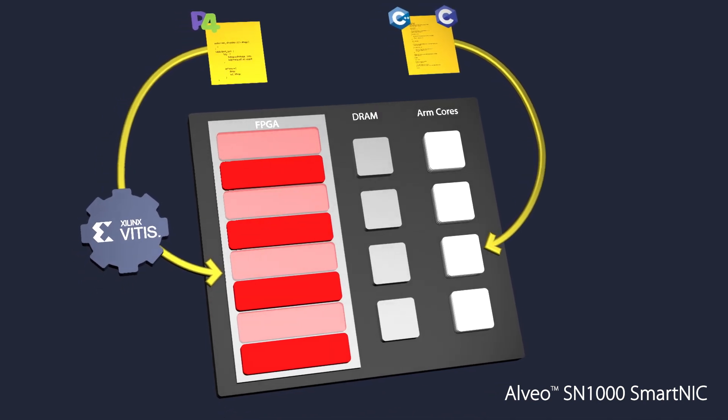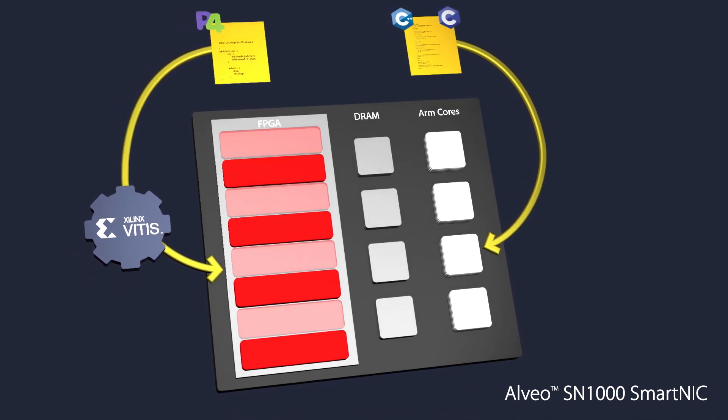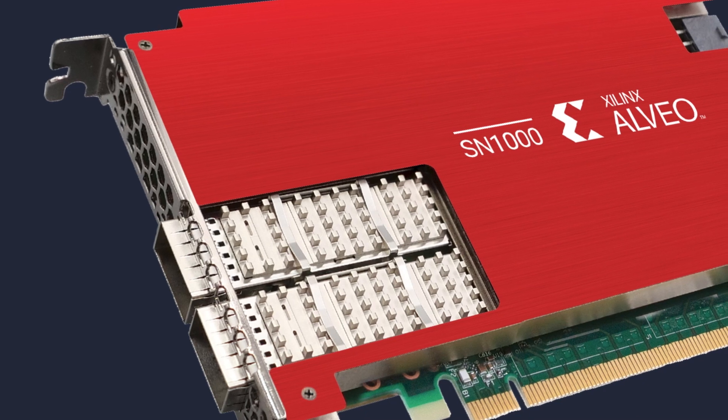The nice thing about P4 and the way Xilinx approaches it is that we don't impose any particular architecture. We have a very simple architecture — packets in, packets out — and around that the P4 program is created. It essentially means that programmers don't need to worry about the underlying hardware, and our tools can abstract that away.